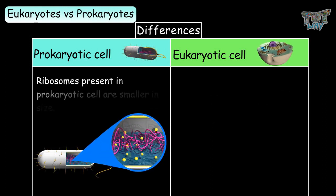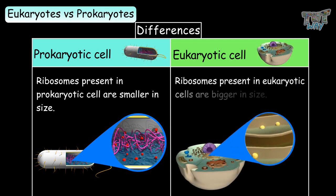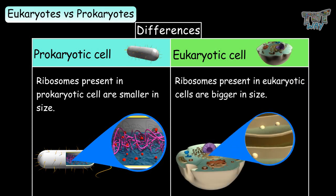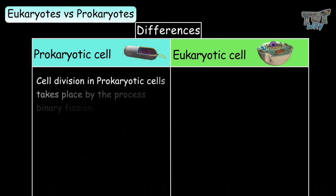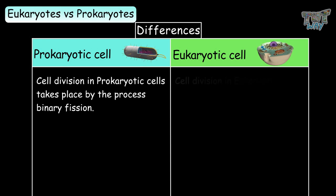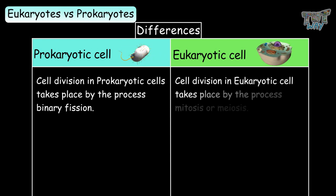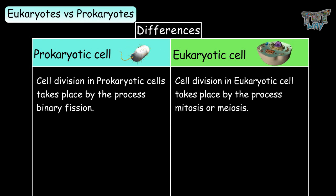Ribosomes in prokaryotic cells are smaller in size, while ribosomes in eukaryotic cells are larger. Cell division in prokaryotic cells takes place by binary fission, whereas in eukaryotic cells it occurs by mitosis or meiosis.